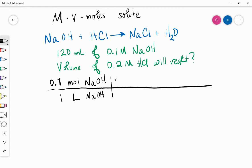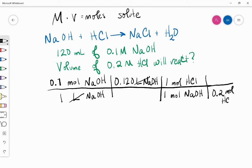We know that we have 0.120 liters of NaOH. Our liters are going to cancel. That's going to leave us with moles. Now, from the balanced equation, one mole of NaOH corresponds to one mole of HCl, and we know that our HCl has a concentration of 0.2 moles in one liter.